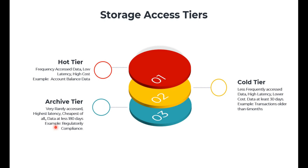An example for archive tier is data that is not used at all but must be kept for regulatory compliance or audit purposes. The data cannot be deleted — for example, after five years the data can be archived but not deleted. There are regulatory compliances at country level, domain level — for example, the healthcare domain has compliance requirements to keep patient data. For these use cases, you go for the archive access tier.